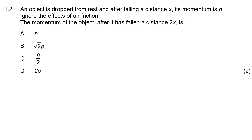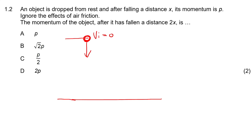An object is dropped from rest and after falling a distance x its momentum is p. Let's quickly draw that out. Here's the ground, and we've got an object dropped from rest so its initial velocity is zero. After it falls a total distance of x, it has a momentum of p.